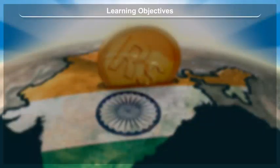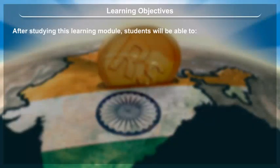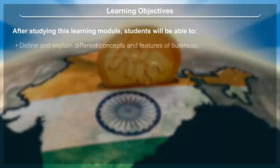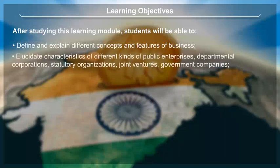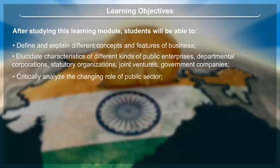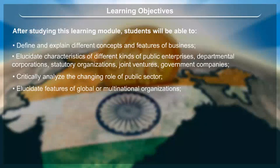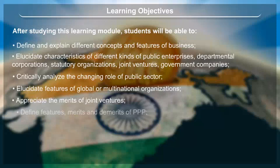Learning objectives. After studying this learning module, students will be able to define and explain different concepts and features of business; elucidate characteristics of different kinds of public enterprises — departmental corporations, statutory organizations, joint ventures, government companies; critically analyze the changing role of public sector; elucidate features of global or multinational organizations; appreciate the merits of joint ventures; and define features, merits and demerits of PPP.